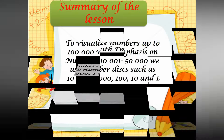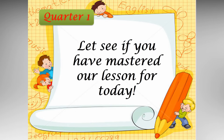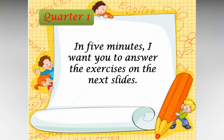Summary of the lesson: To visualize numbers up to 100,000 with emphasis on numbers 10,000 to 50,000, we use numbered discs such as 10,000s, 1,000s, 100s, 10s, and 1s. Let's see if you have mastered our lesson for today. In 5 minutes, I want you to answer the exercises on the next slides. Timer starts now.